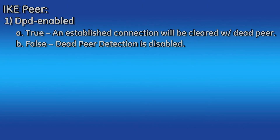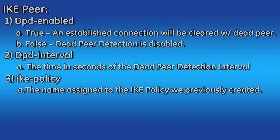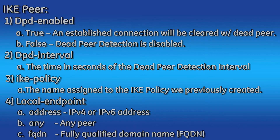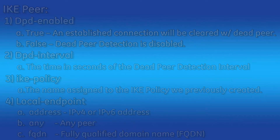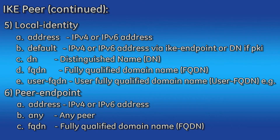DPD enabled can be set to true or false. If true, an established connection will be cleared on detecting a dead peer; if false, the function is disabled. The DPD interval is the time in seconds of the dead peer detection interval. The IKE policy field will be set to the name of the IKE policy we previously created. Under local endpoint you have the options of address, any, or FQDN. Under local identity you have the options of address, default, distinguished name, FQDN, or user FQDN.